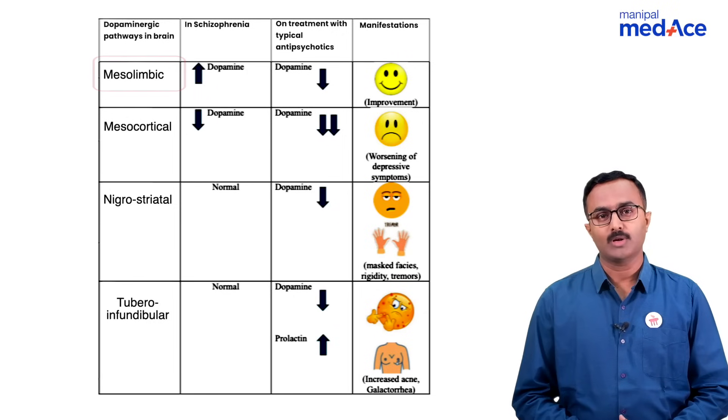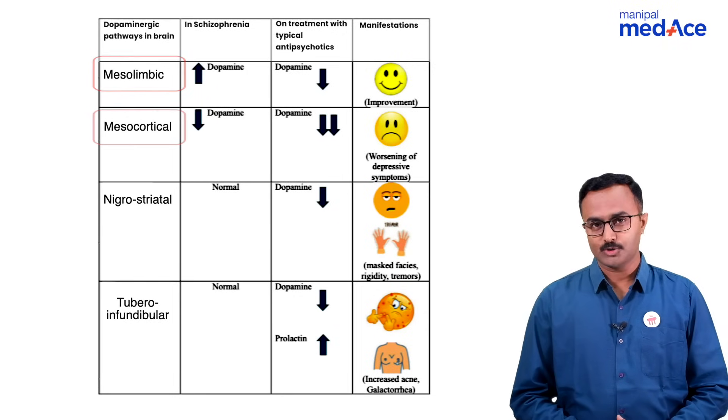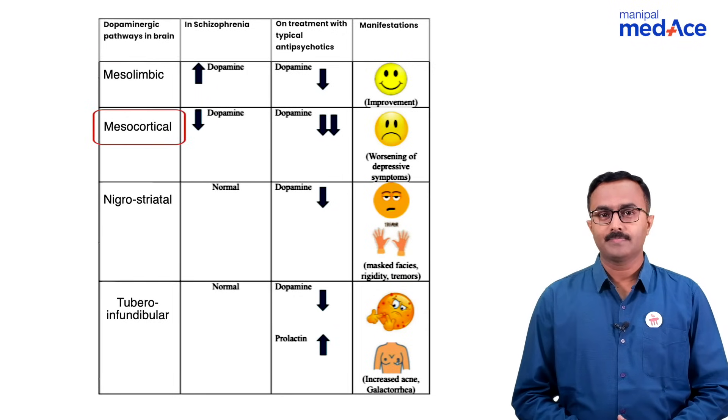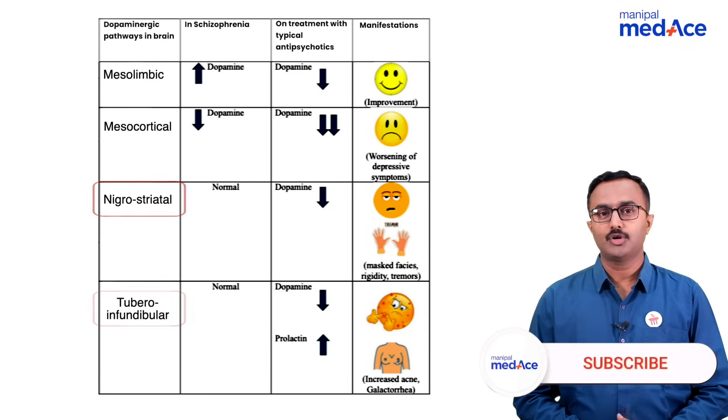There are four dopaminergic pathways in the brain: mesolimbic, mesocortical, nigrostriatal, and tuberoinfundibular pathway.